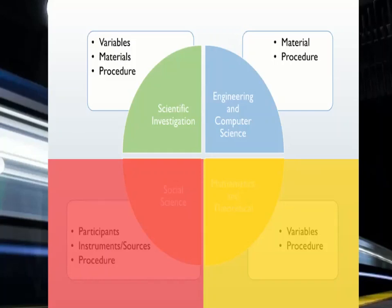For mathematical and theoretical project reports, the method section describes the mathematical techniques used to prove the hypothesis or answer the research question. The variables must be listed. In the procedure section, explain the mathematical process or theories followed and provide a detailed description of how this was carried out. Details of long derivations should be put in the appendix.